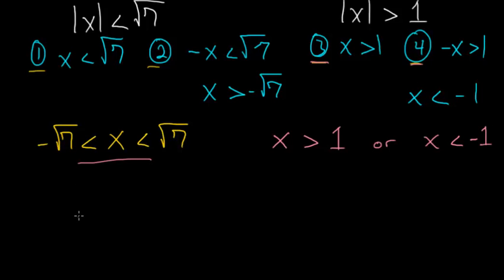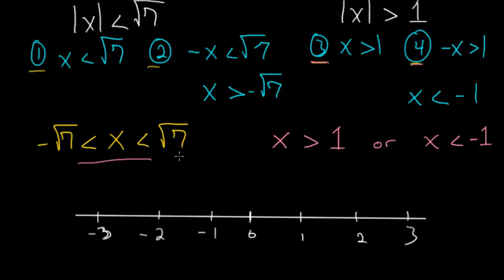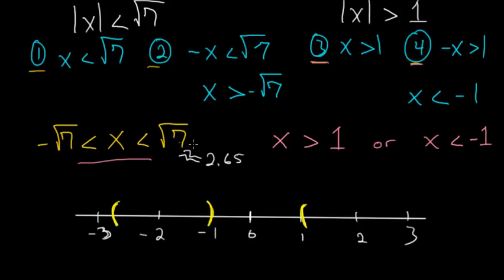One way to see this more clearly is to graph it on a number line. The square root of 7 is about 2.65. From Cases 3 and 4, x has to be bigger than 1, so we put an open parenthesis there, and x has to be less than negative 1, so we mark that as well. We also know x is bigger than negative square root of 7 and less than square root of 7. The solution is anywhere in either of these two ranges on the number line.